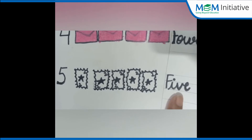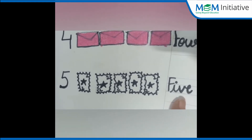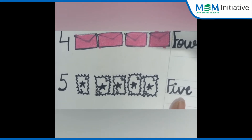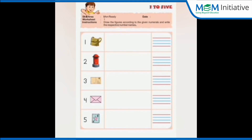Children, you all have to do this activity in your book — you have a similar page in your book. You have to draw one bag as the number given is 1, and write the number name 1. Next is number 2, so draw 2 letter boxes and write the number name 2. Number 3, draw 3 postcards and write the number name 3. Next is number 4, draw 4 envelopes and write the number name 4.